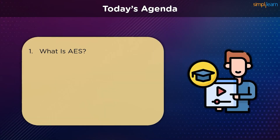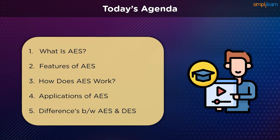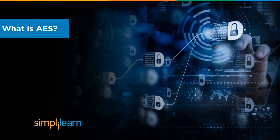Today we take a look at what the Advanced Encryption Standard is and its origin. We learn about the features of AES and the multiple steps that comprise the working of this algorithm. Finally, we go through the applications of AES and the differences between it and the past global standard for data security, DES. Let's learn what Advanced Encryption Standard is.